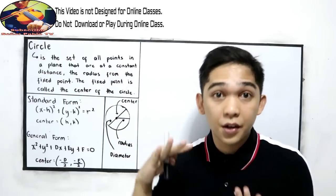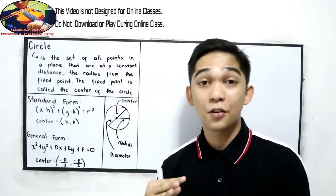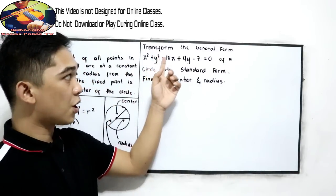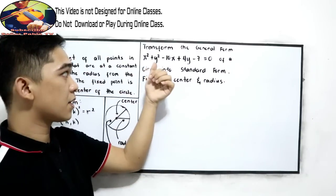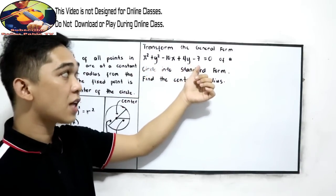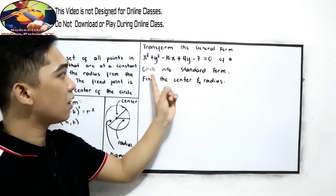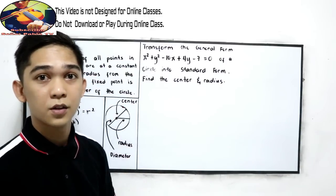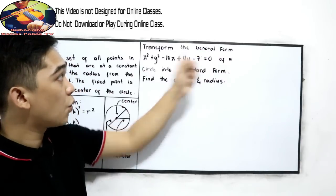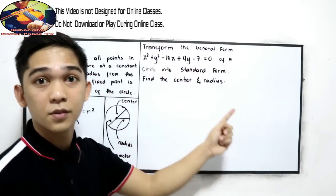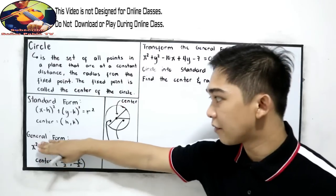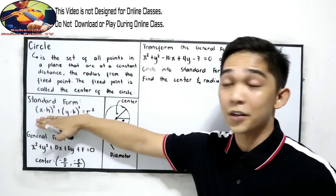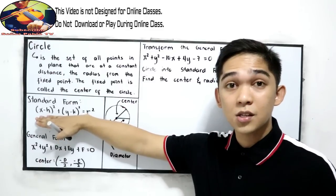Let's have the following example. Transform the general form x squared plus y squared minus 10x plus 4y minus 7 equals 0 of a circle into standard form. Find the center and radius. From the general form, we will transform it into standard form, and then find the radius and center.